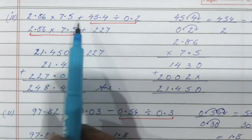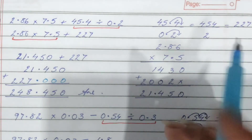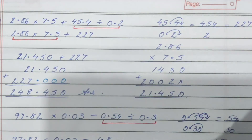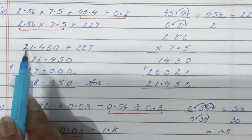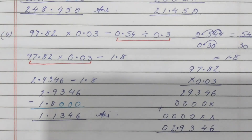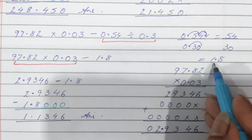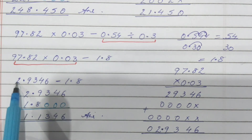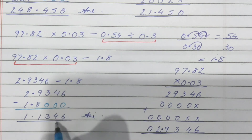Look at the fourth sub-part: 2.86 into 7.5 plus 45.4 divided by 0.2. First we divide — I have shown how to shift the decimal, giving 227. Then we do the multiplication — counting decimal places and putting the decimal. After multiplication and division, finally we add them. The last sub-part starts with division: shift the decimals to get 1.8. Then solve the multiplication. After multiplication and division results are obtained, do the subtraction by making like decimal places.